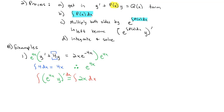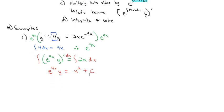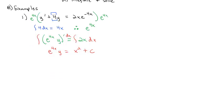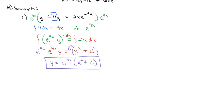Now we integrate both sides dx in order to solve. The integral of the derivative on the left is just e to the 4x times y. On the right, the integral of 2x becomes x squared plus a constant. All we have to do to finish solving is divide by e to the 4x, or equivalently multiply by e to the negative 4x on both sides. So y equals e to the negative 4x times x squared plus a constant, and we have our solution. This process feels a little weird at first and takes practice, so let's do a few more examples.